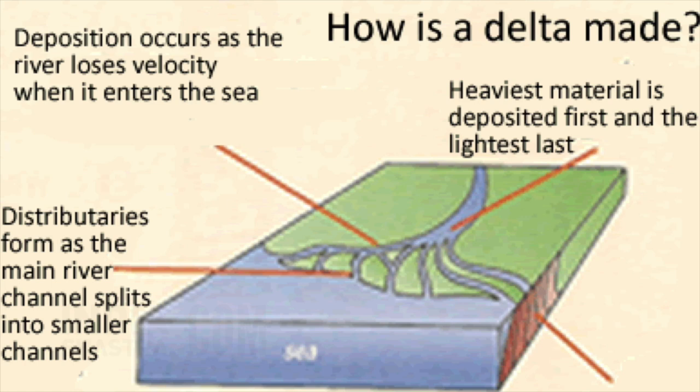Let us talk about the distributaries. As the river approaches the sea, the speed of the flowing water decreases. This results in a breaking up of the river into a number of streams called distributaries. This happens because the load that the river used to carry gets deposited as the speed has decreased, and it also leads to further development, that is, the delta.